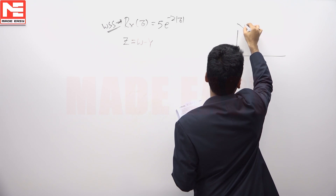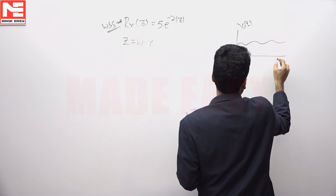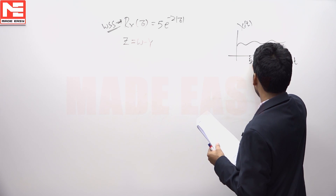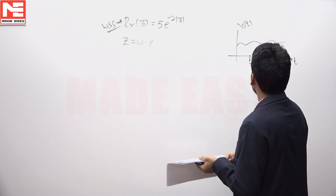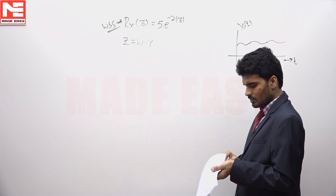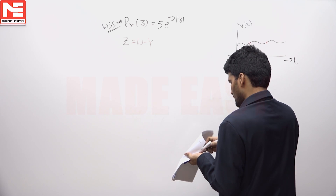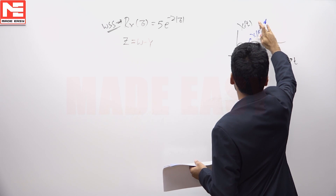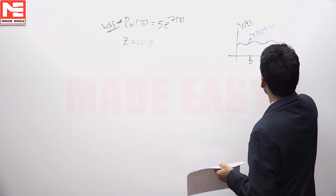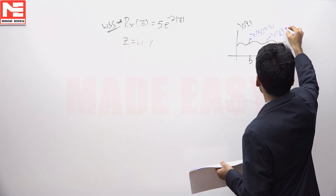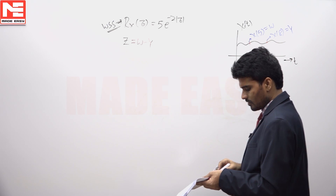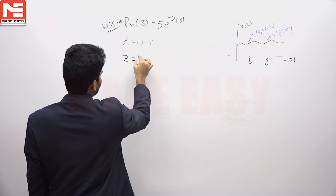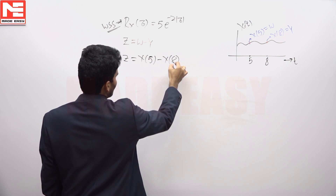The random process X(t) is sampled at t=5 and t=8 seconds. Sampling X(t) at t=5 gives the random variable X(5), identified as W. Sampling X(t) at t=8 gives the random variable X(8), identified as Y. So Z = W - Y = X(5) - X(8).